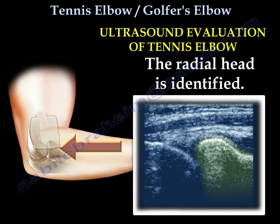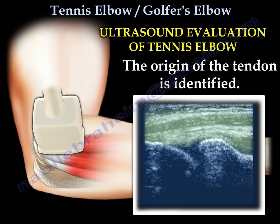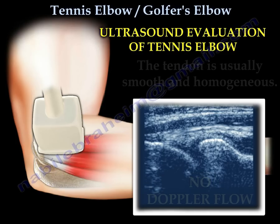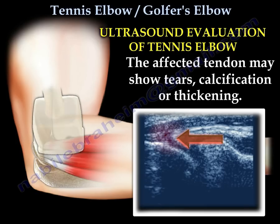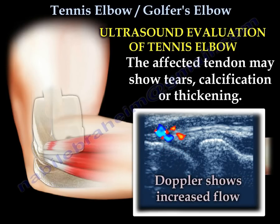The radial head is identified. The bony cortex of the epicondyle is identified — it is usually very smooth. The origin of the tendon is identified. The tendon is usually smooth and homogeneous and has no Doppler flow. The affected tendon may show tears, calcifications, or thickening. Here you can see a picture of a tear in the tendon; the Doppler shows increased flow.